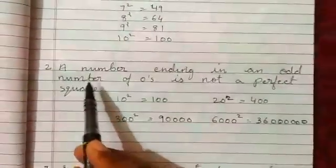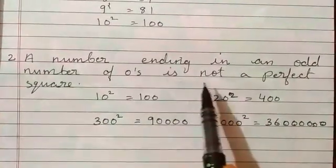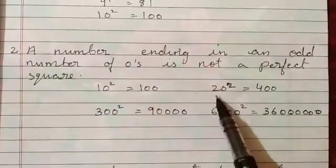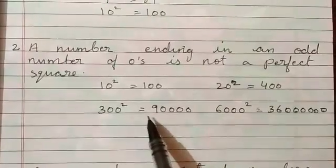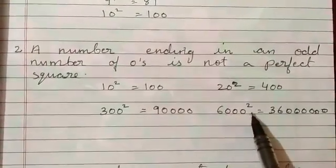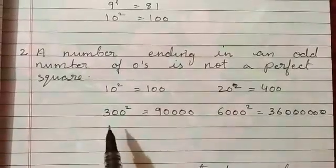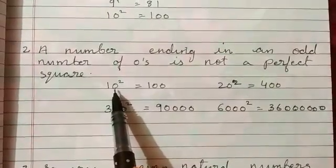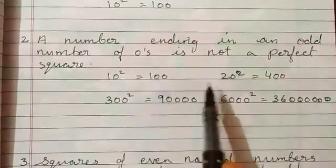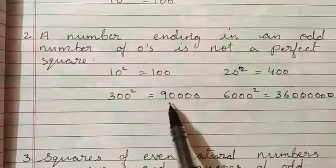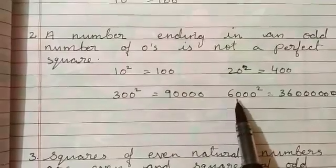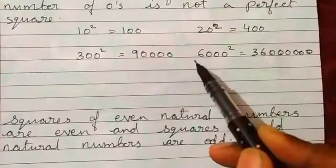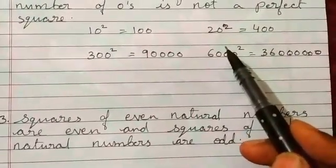Second property: a number ending in an odd number of zeros is not a perfect square. Consider: 10²=100, 20²=400, 300²=90,000. When there is 1 zero at the end of the number, there are 2 zeros at the end of the square. If there are 2 zeros at the end of the number, there are 4 zeros at the end of the square, and for 3 zeros there are 6 zeros at the end of the square. So it is not possible to have an odd number of zeros in a perfect square.